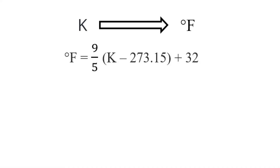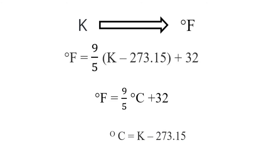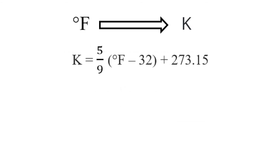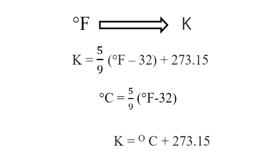For Kelvin to Fahrenheit, we combine the formula for converting Celsius to Fahrenheit with the formula for Kelvin to Celsius — the Kelvin-to-Celsius formula is expanded into the Celsius-to-Fahrenheit formula. For Fahrenheit to Kelvin, we combine the formula for converting Fahrenheit to Celsius with the formula for Celsius to Kelvin — the Fahrenheit-to-Celsius formula is expanded into the Celsius-to-Kelvin formula.